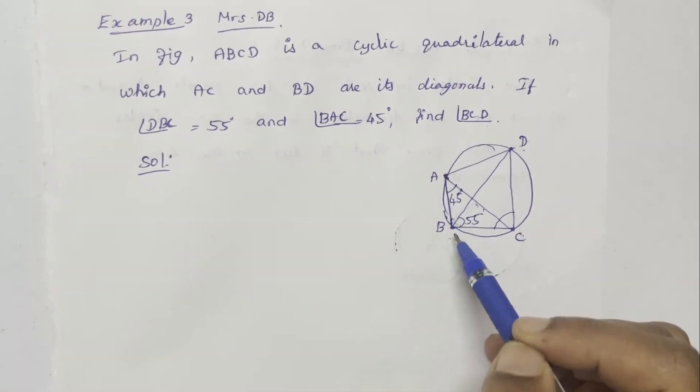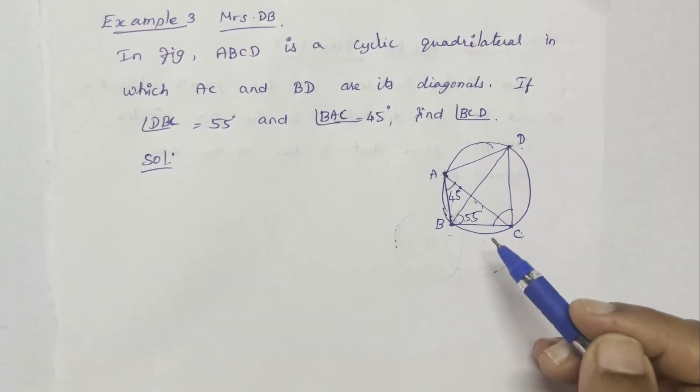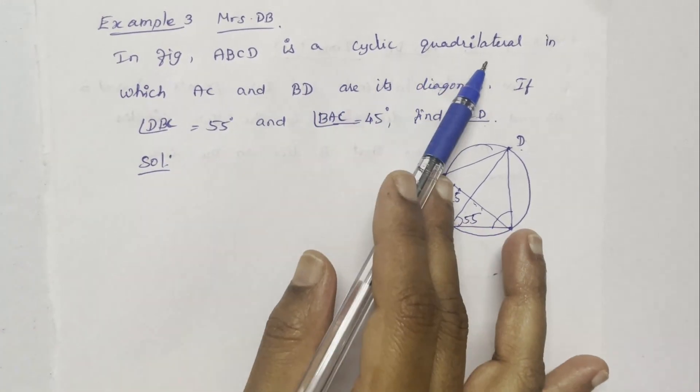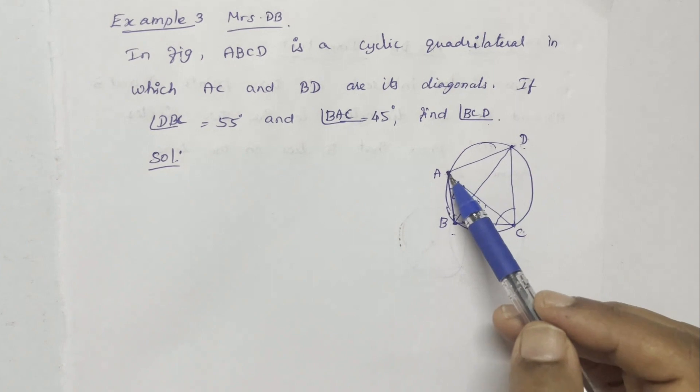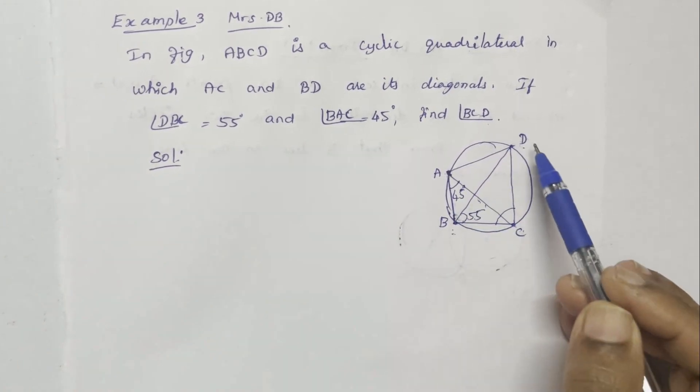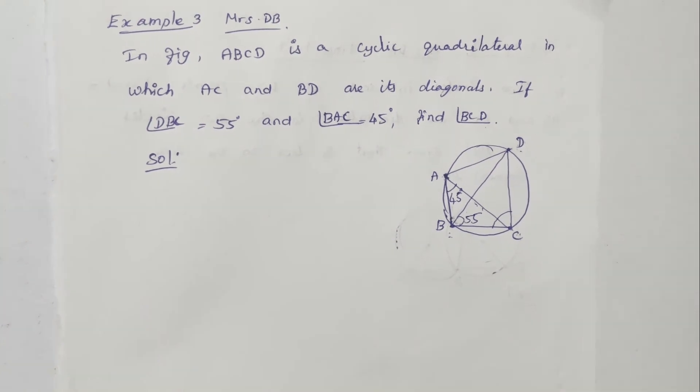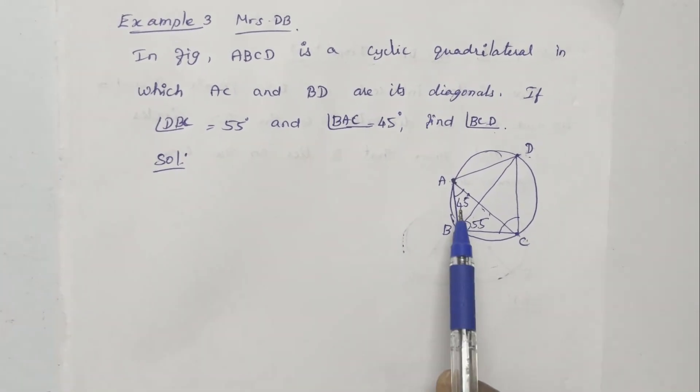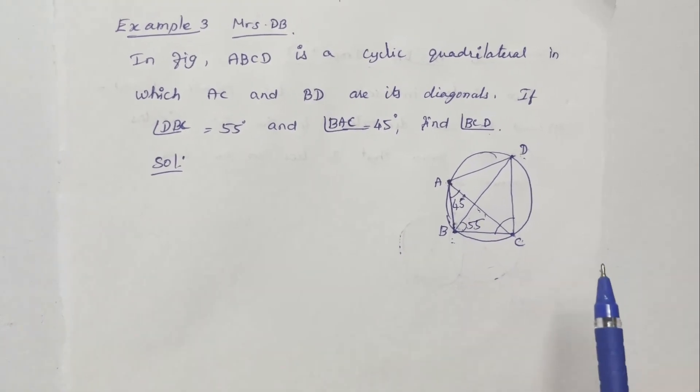Now, AB is a chord, BC is a chord, CD is a chord, AD is a chord. This means ABCD is a cyclic quadrilateral. The cyclic quadrilateral means that the quadrilateral has 4 vertices on the boundary. The property of a cyclic quadrilateral is that opposite angles sum to 180 degrees.